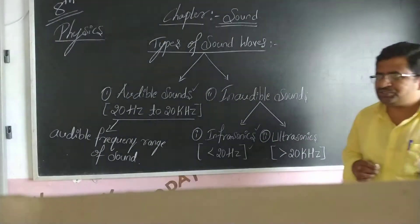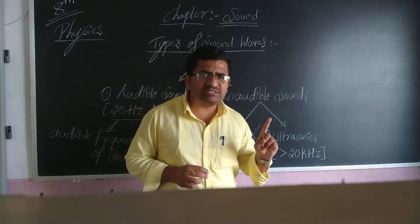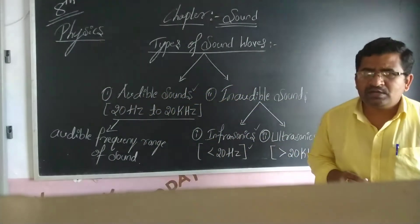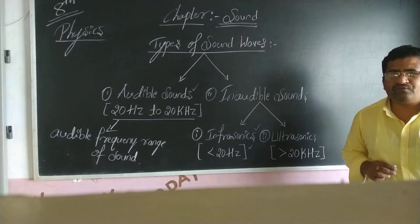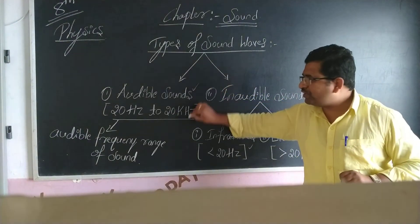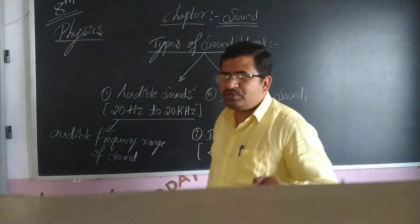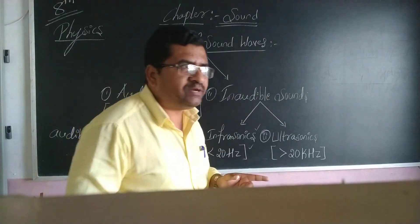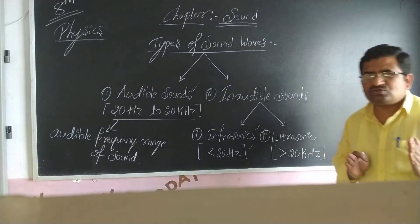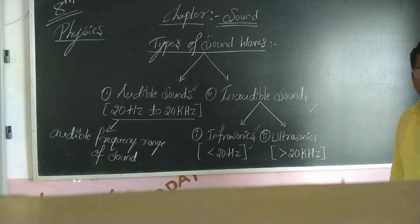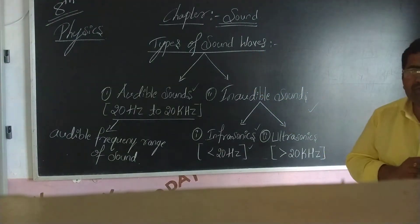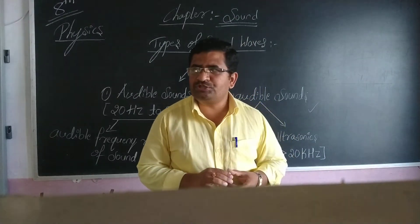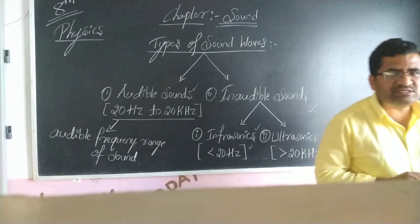This is the complete explanation regarding the types of sound waves. Mainly, there are two types: audible and inaudible sound waves. You should be perfect in the definition and frequency range of audible sound waves, the definition and frequency range of inaudible sound waves, and what is meant by infrasonic and ultrasonic sound waves. These are very important for examination. Thank you.